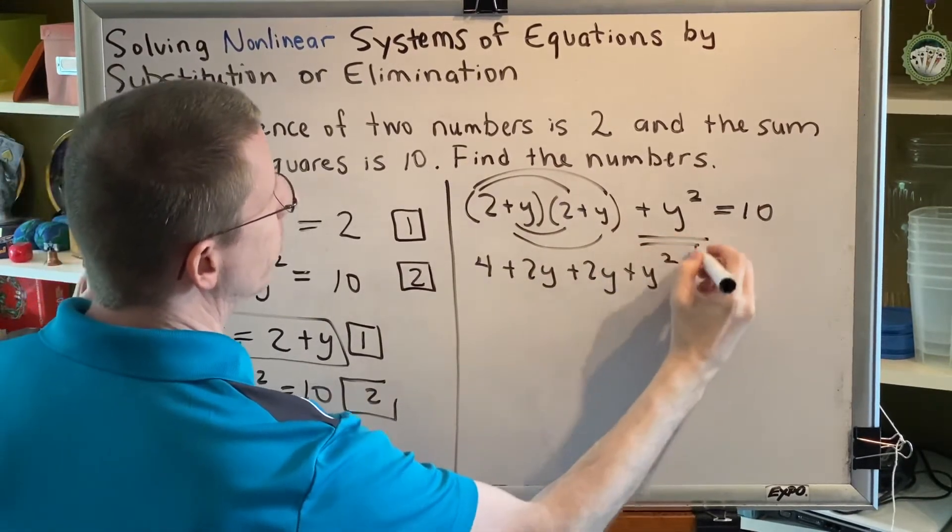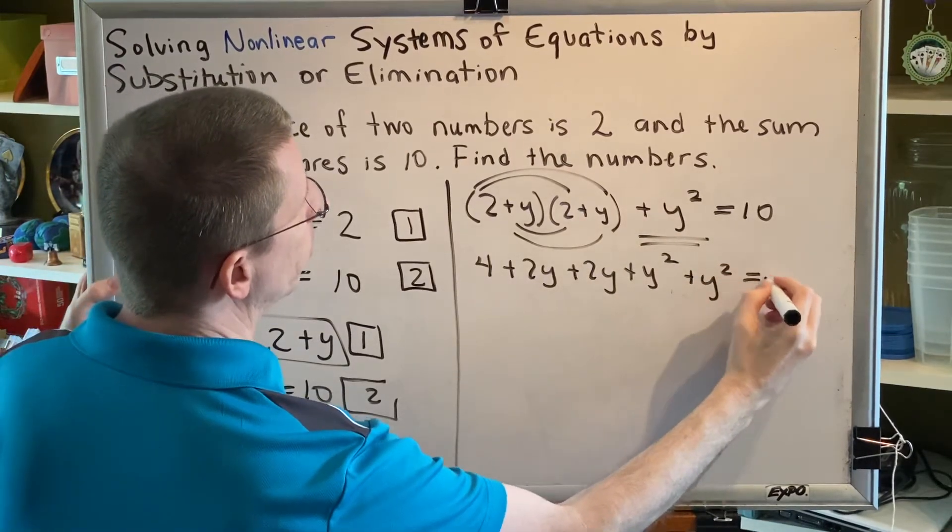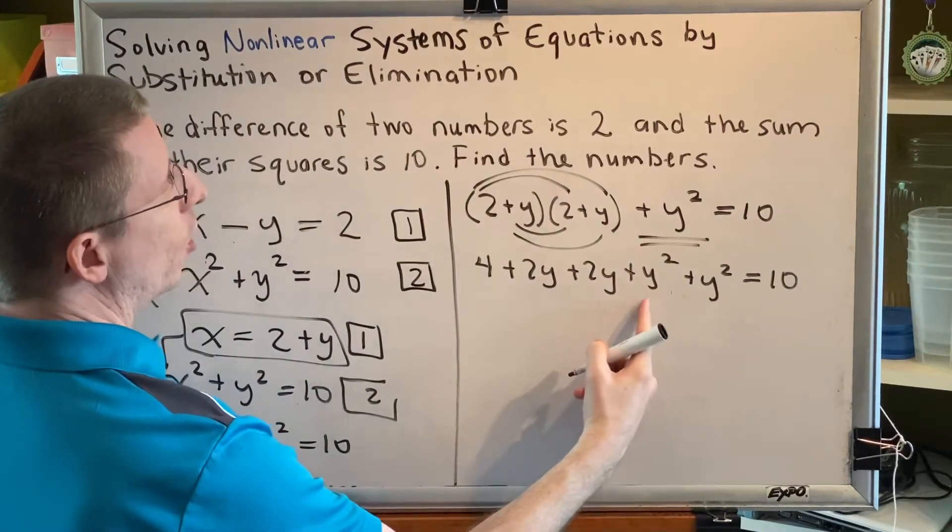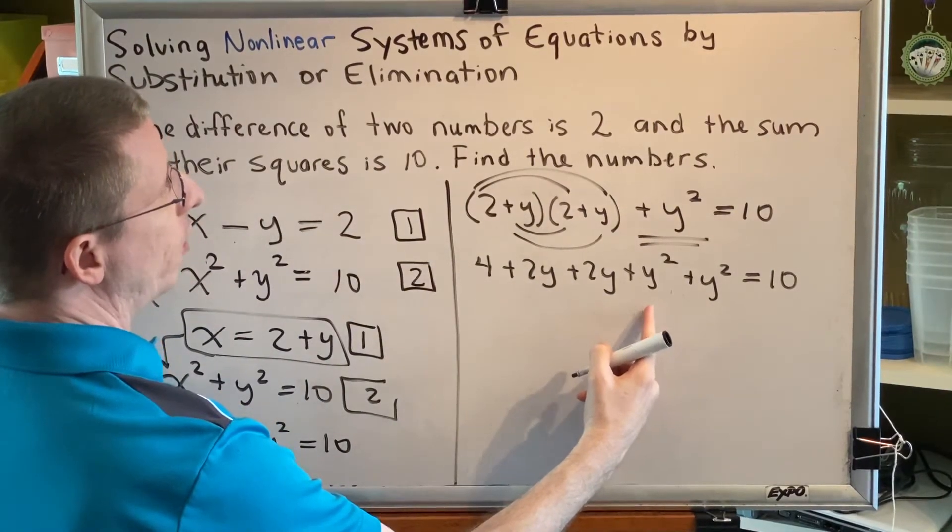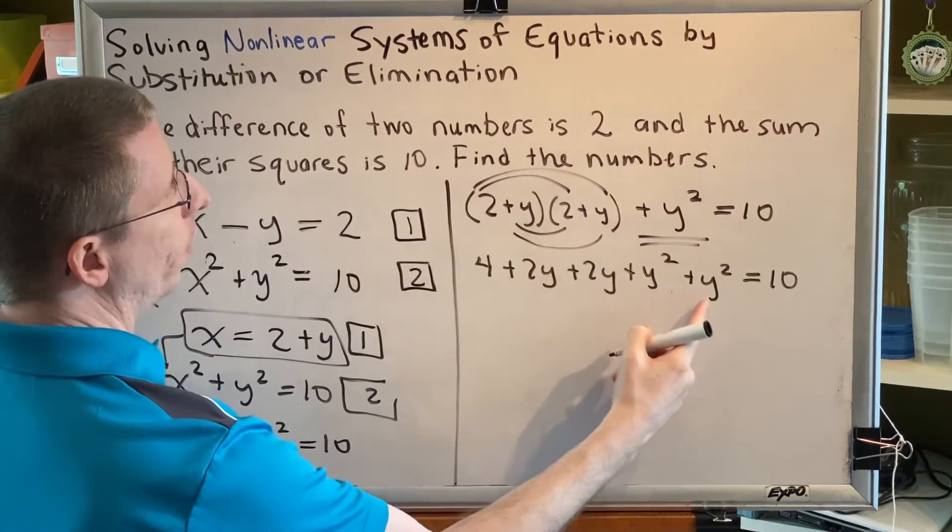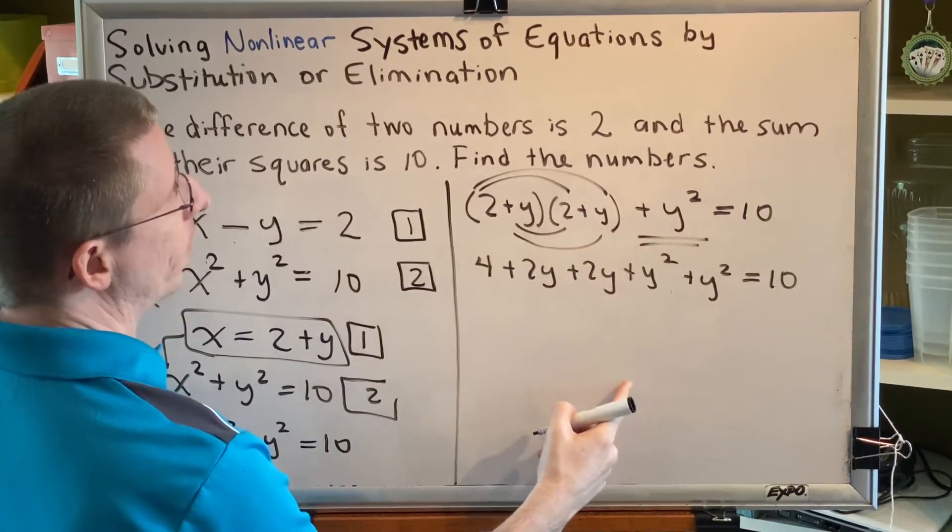Then plus this y squared equals 10. It's very easy to make a mistake here by thinking, once you've written plus y squared, that you've already written this one. You have not. This one comes from the FOIL. This one comes from the term directly above it. So be careful.